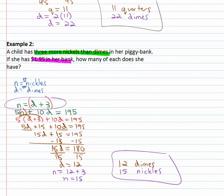Twelve dimes and fifteen nickels — three more nickels than dimes — with a total of one ninety-five. By clearly identifying the variables and making one equation for the number of coins and one equation for the value, we can quickly solve these problems.